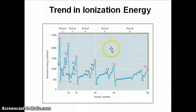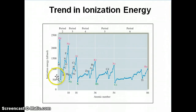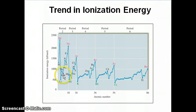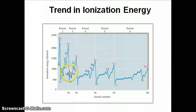We'll go back to this plot of the trend in ionization energy and point out a couple of exceptions and rationalize why they exist. The first exception is the beryllium versus boron violation. We know the trend should go up, so from beryllium to boron we should see an increase, not a decrease. The question is: why is there a decrease instead of an increase? To answer this, we need to look at the electron configuration of beryllium and boron.